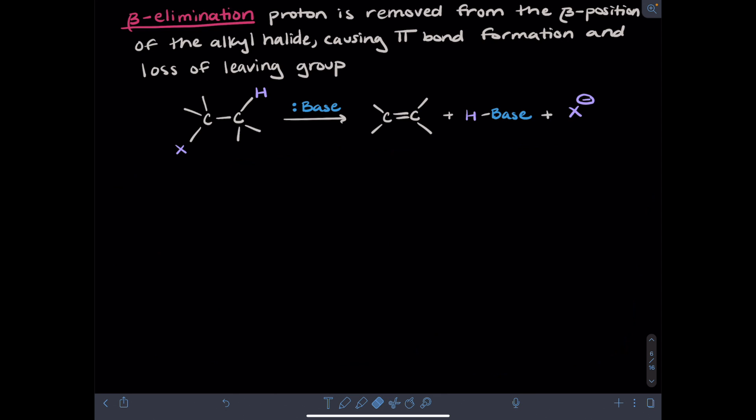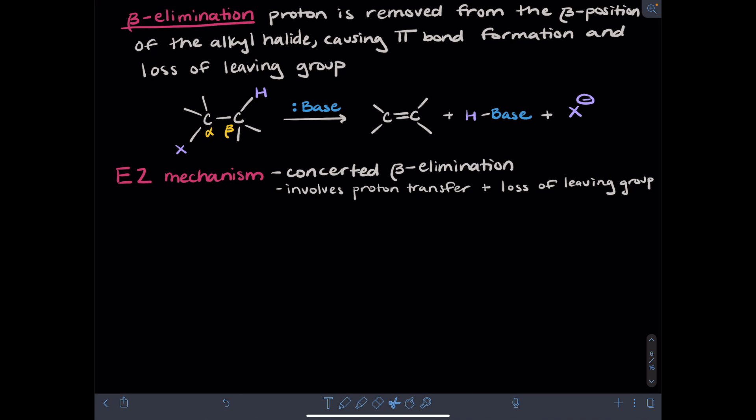With these foundational ideas about alkenes in mind, I now want to turn our attention to elimination reactions. In a beta elimination, the proton that's being removed from the molecule is beta to the halide leaving group. When this proton at the beta position is removed, it causes the formation of a pi bond of the alkene, and it kicks out the leaving group. Recall that the carbon the halide is attached to is called the alpha position, and the carbon attached to that is the beta position. For the E2 mechanism, this is a concerted reaction — all of the bond breaking and forming is occurring in a single step.